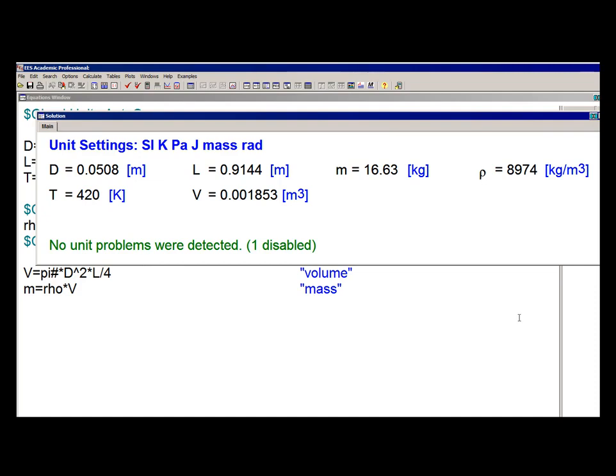It's also possible to have EES attempt to discern the appropriate units for every variable based on the equations in which it's used and then set these units automatically. This isn't really recommended because now EES isn't really checking your unit consistency. It's instead trying to force unit consistency if possible by adjusting the units of the variables. But it can provide a nice shortcut for setting units if you like that.